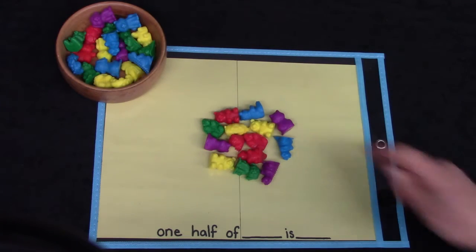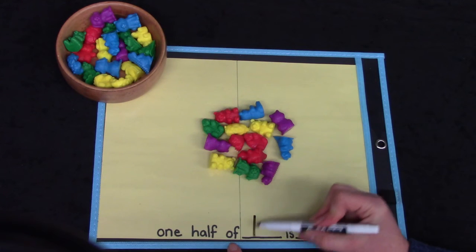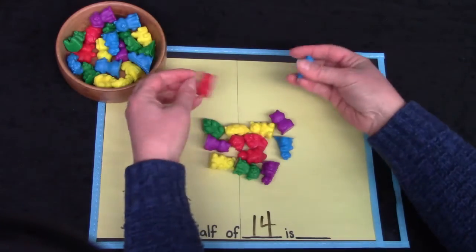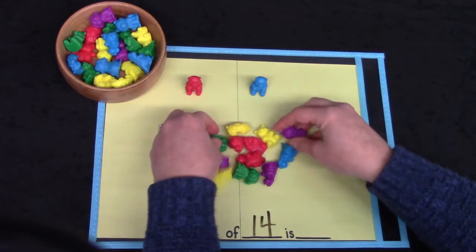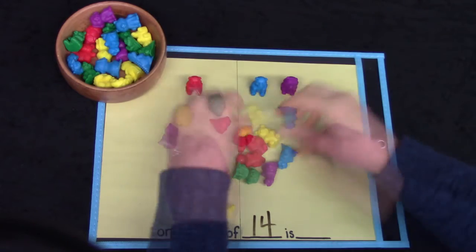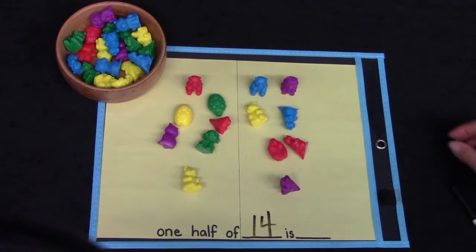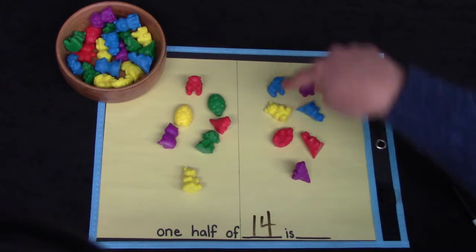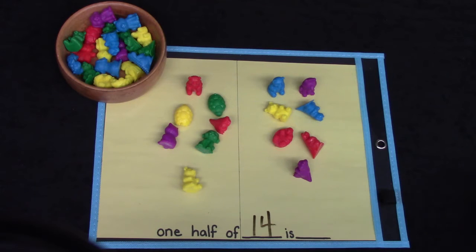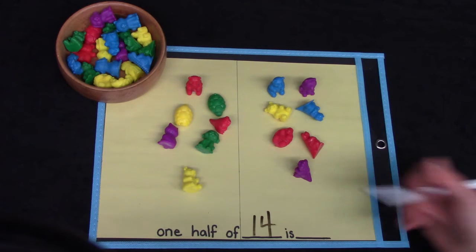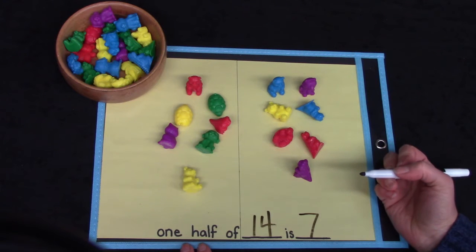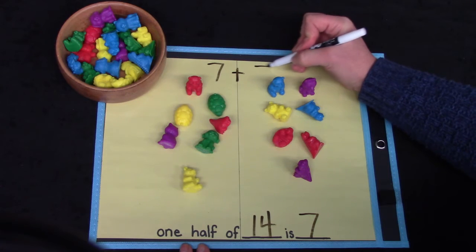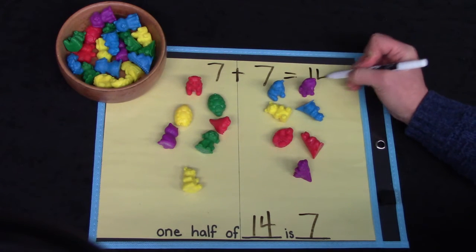I have 14 objects and we're going to find one half of 14. To be fair, I am going to put one object on each side each time so that I am sharing the objects. Each side has how many objects? Two, four, six, seven. One half of 14 is seven. Maybe you remember that seven plus seven equals 14.